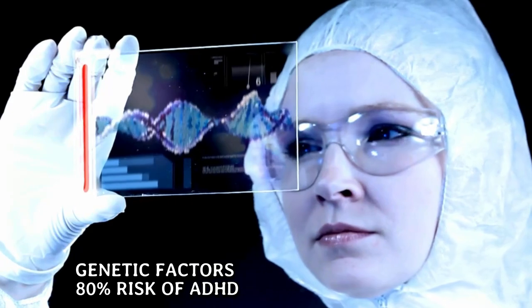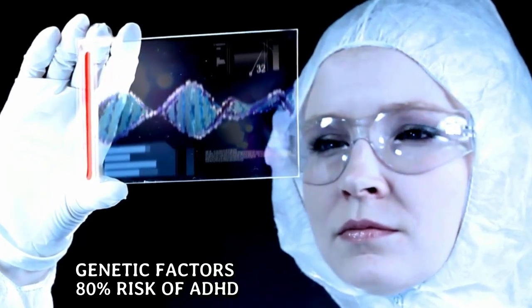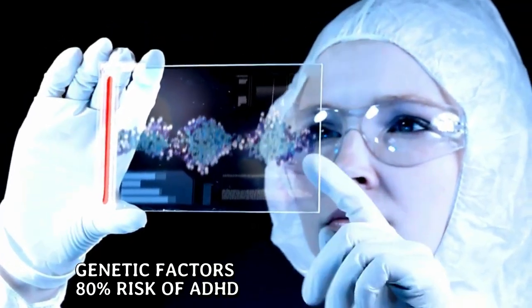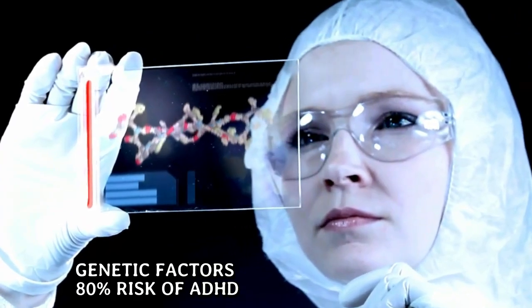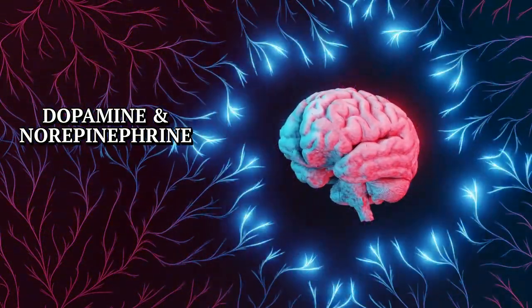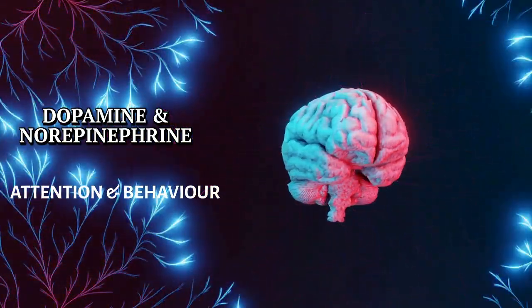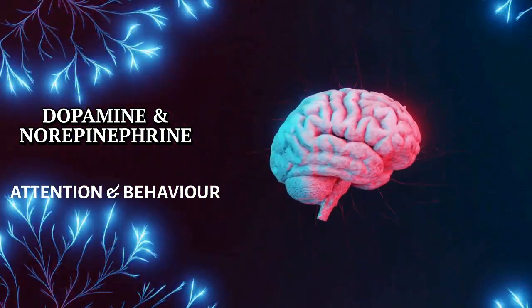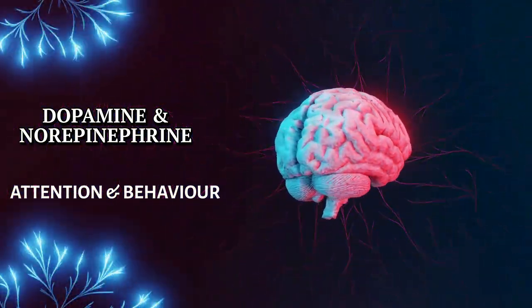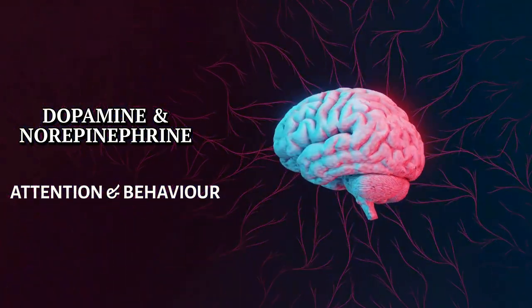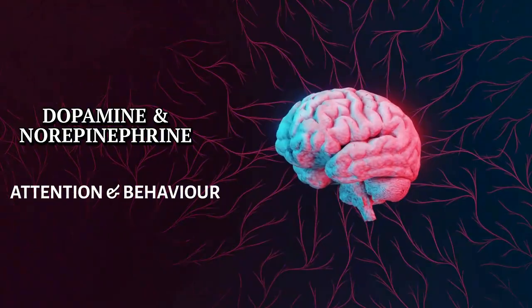But what about the root causes? ADHD is highly heritable, with genetic factors contributing up to 80% of the risk. Researchers have identified several genes linked with the disorder, particularly those involved in the brain's dopamine system. Dopamine and norepinephrine are the neurotransmitters that are very important for regulating our attention and behaviour. In ADHD, there is often an imbalance between these two neurotransmitters, leading to the characteristic symptoms of hyperactivity, inattention and impulsivity.